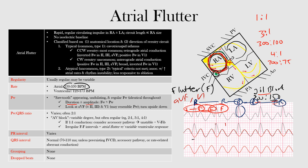The term 'AV block' is somewhat of a misnomer in the context of atrial flutter. The AV block here is more of a physiologic response to the rapid atrial rates, implying a normally functioning AV node rather than a pathologic block. Because the atria are bombarding the AV node so rapidly, the node becomes refractory and cannot transmit every impulse — it is not an actual problem at the AV node itself.